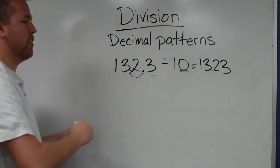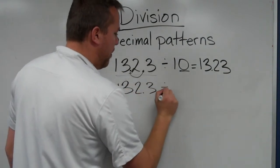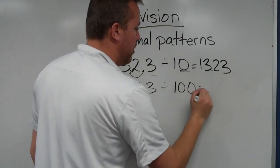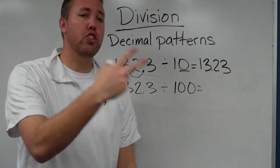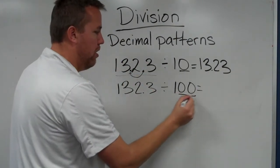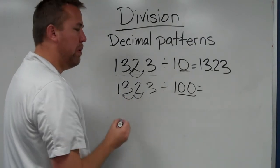So, what if we had 132 and three-tenths divided by one hundred? One hundred, two zeros, two places, one, two. So we would take it and we would move it two places.